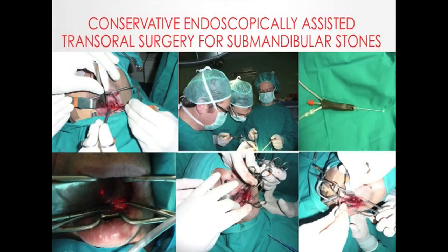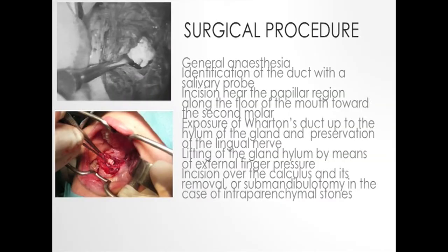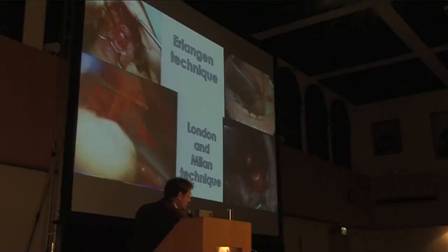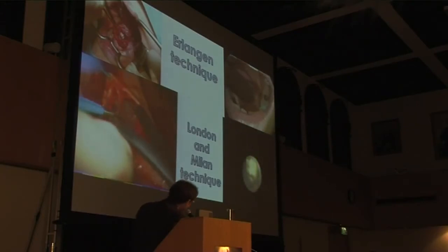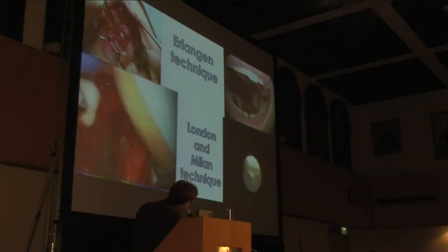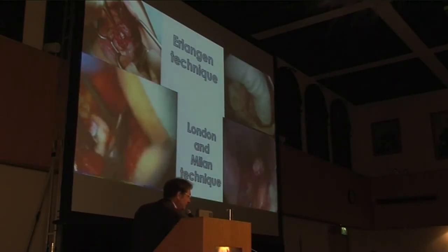The technique is performed in my experience and in other experiences under general anesthesia. The most important thing during the procedure is pushing up with external finger pressure, which may favor pushing the gland and the ductal system into the oral floor. Here you can see three video sequences of two techniques: the Erlangen technique based on prolonged duct dissection and removal of the stone at the level of the hilum, and the London and Milan technique based on conservation of the entire ductal system.